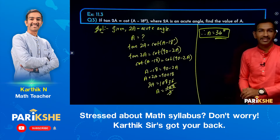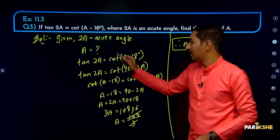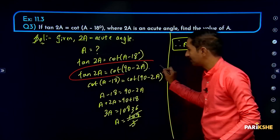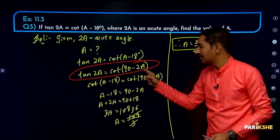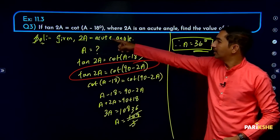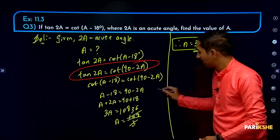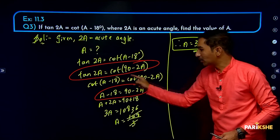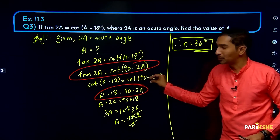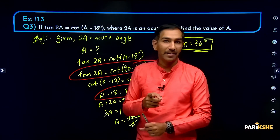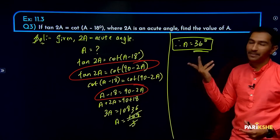This is our correct answer. The important concept used here is: cot(90 - θ) = tan θ for complementary angles. Also note that 2A is given as an acute angle. The key step is that when both sides have the same trigonometric ratio, you can equate the angles. This is the same principle as in the earlier tan(A+B) = 60 degrees type problem.